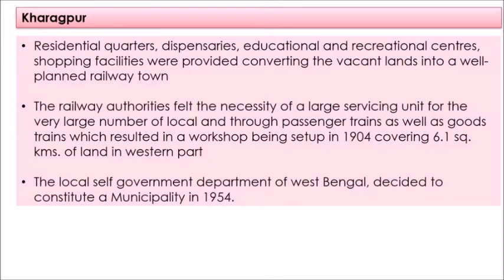The railway authorities felt the necessity of a large servicing unit for the very large number of local, through passenger, and goods trains, which resulted in a workshop being set up in 1904 covering about 6.1 square kilometers in the western part of the town. One of the earlier IITs was set up in Kharagpur on an area of about 500 hectares, located five kilometers from the railway station. The municipality of Kharagpur was formed in 1954.